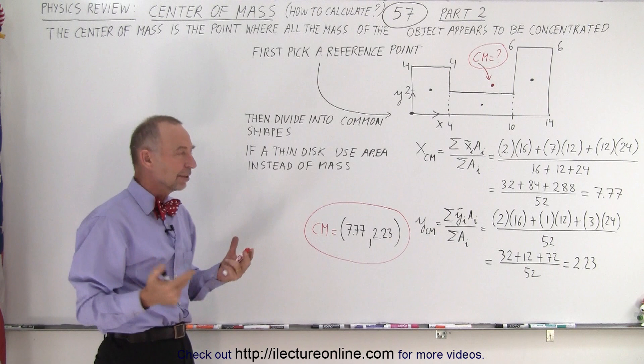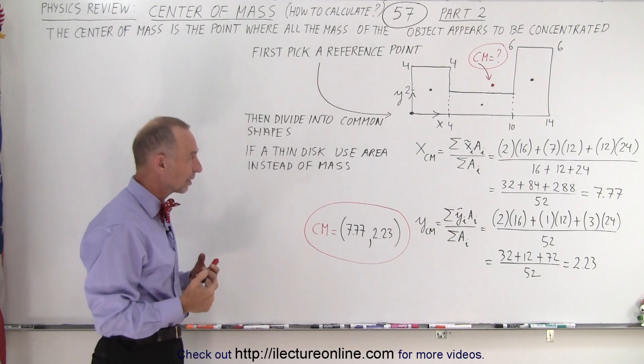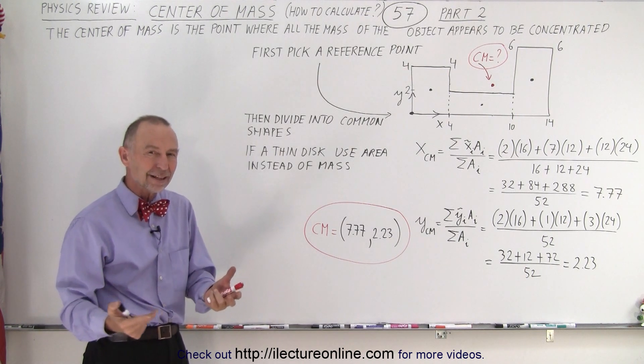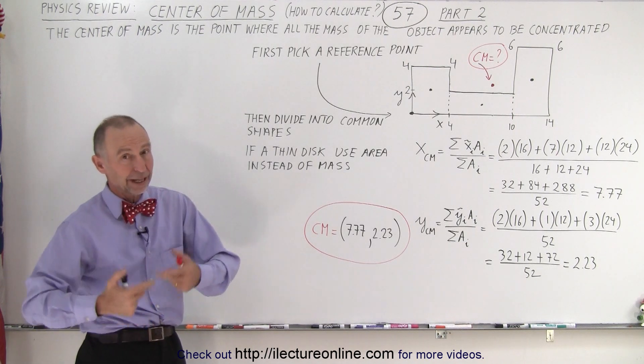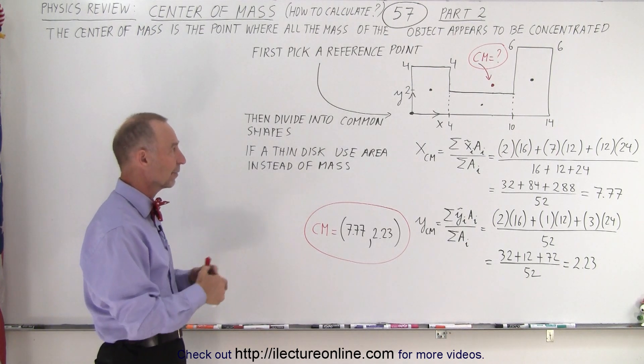Then if you have a thin disk and this is assumed to be a thin disk, then we can use area instead of mass because they're proportional. If you have double the area, you'll have double the mass. So we can use area instead of mass.